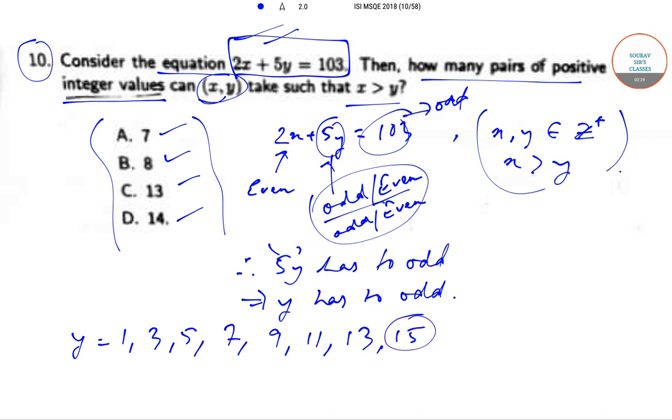Now for 15, let's check. When we take y = 15, then 2x + 75 = 103. This implies that 2x = 103 - 75 = 28, and this will imply that x = 14, which is less than 15 and as such less than y.